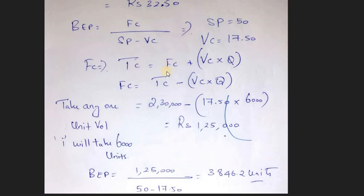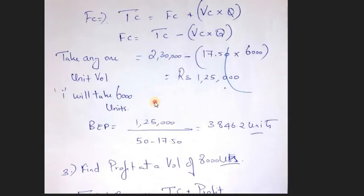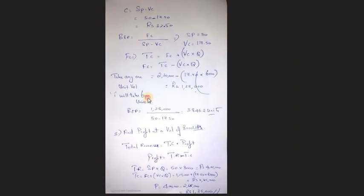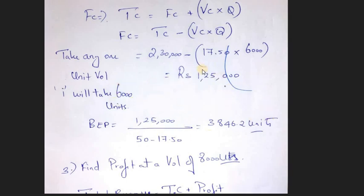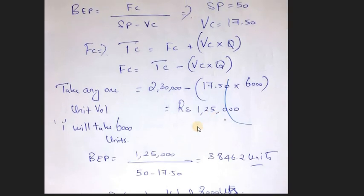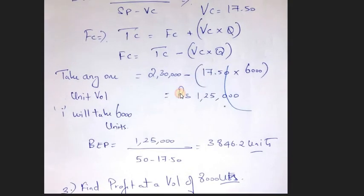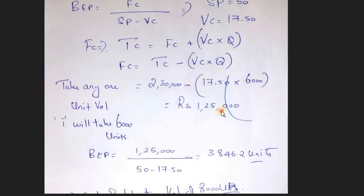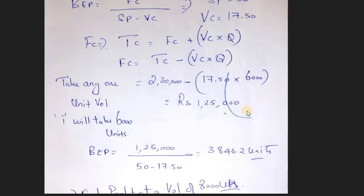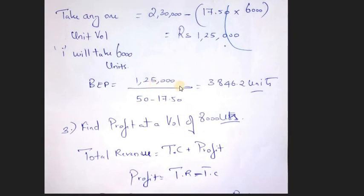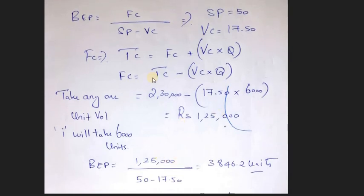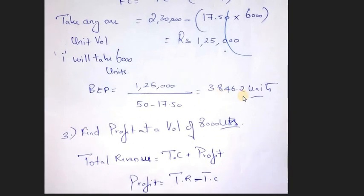To find fixed cost, use the formula TC equals FC plus VC multiplied by Q, then rearrange: FC equals TC minus (VC × Q). For 6,000 units: FC = 2,30,000 minus (17.50 × 6,000) = Rs. 1,25,000. For 10,000 units we get the same: Rs. 1,25,000. So now substituting into the break-even point formula — FC is 1,25,000, SP minus VC is 32.50 — the break-even point is 3,846.2 units.